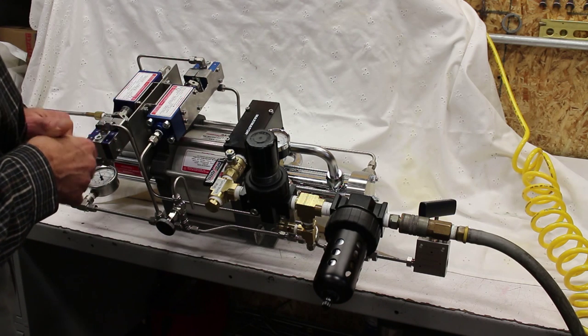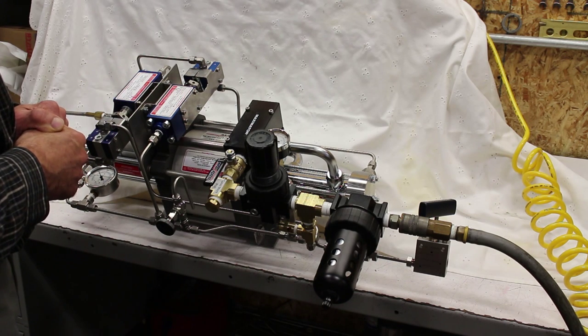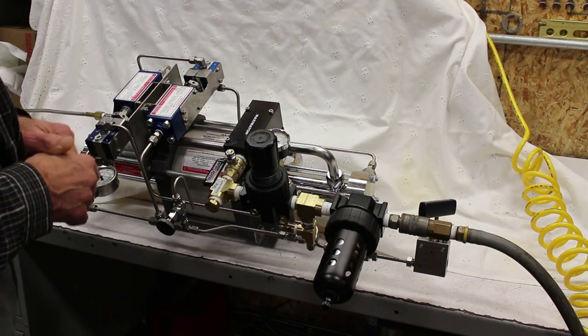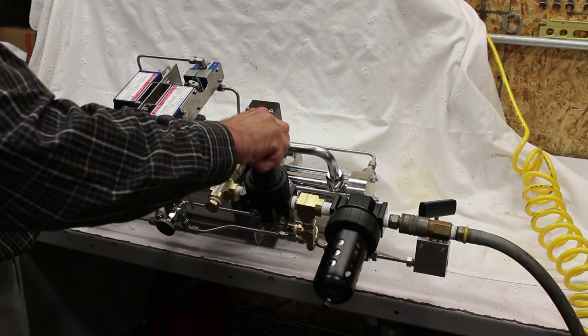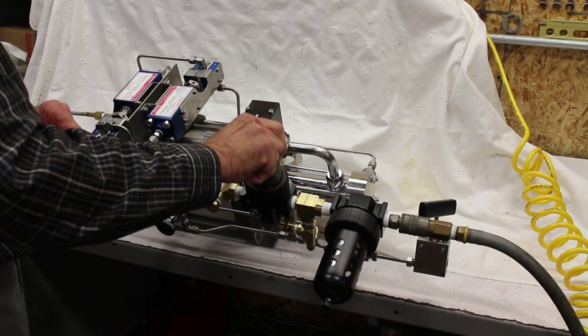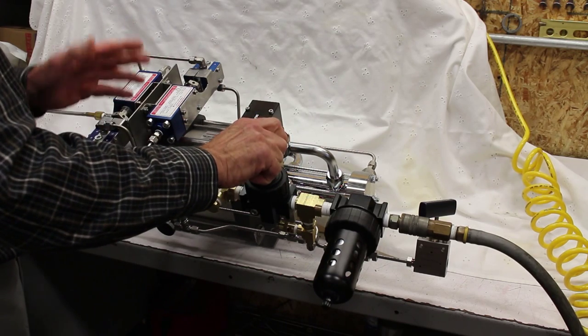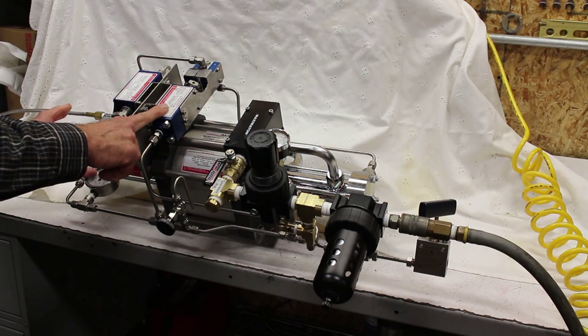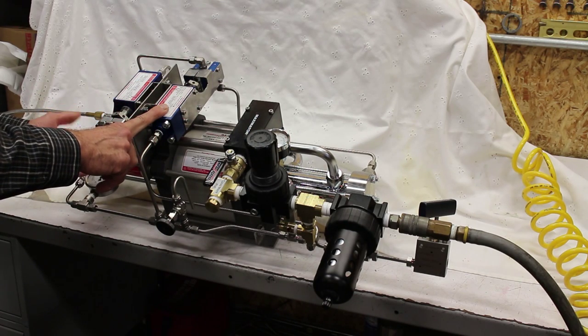Again, the outlet switches are settable. This happens to be set for 1,200 for this booster to shut off automatically through the outlet pressure switch. So as I crank this air drive regulator upwards, it'll continue to take a stroke, and the outlet pressure switch just shut off. It's at 1,200 psi, and it's ready for the gas to be consumed.